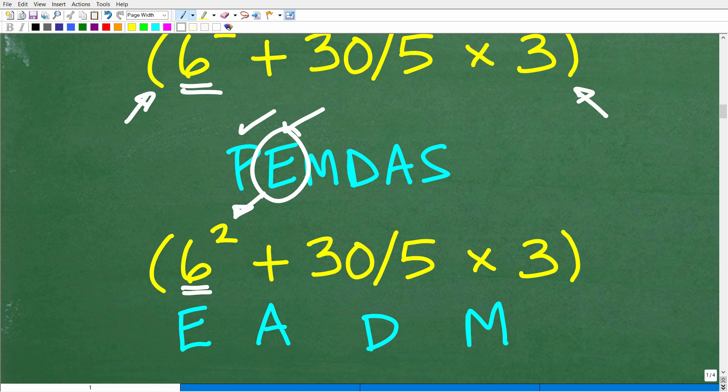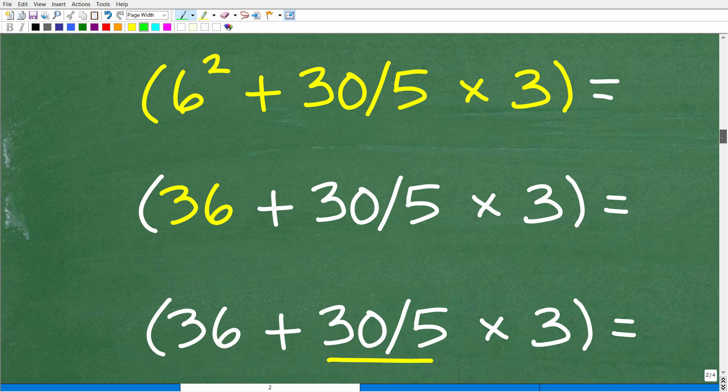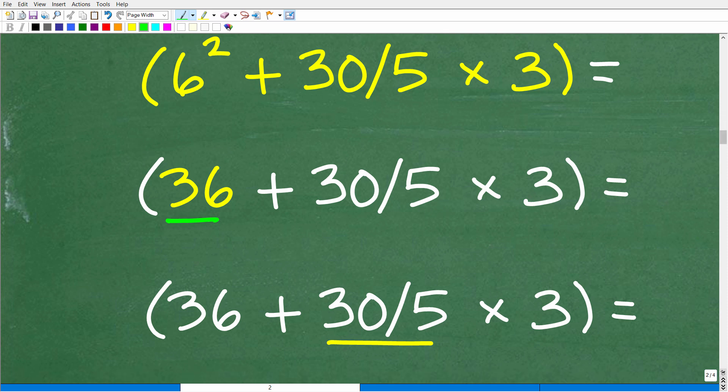But before I continue on, let's just kind of put some letters to these operations. So, we have addition. So, that's A right here. 30 divided by 5. That's D. So, that's D right there. And then this is multiplication. So, that's M right there. Now, again, PEMDAS is a checklist that goes from left to right. So, think about what we're going to do next after we take care of this 6 squared. Okay. So, 6 squared is what? Well, that's 6 times 6 or 36. Okay. So, now we have 36 plus 30 divided by 5 times 3.